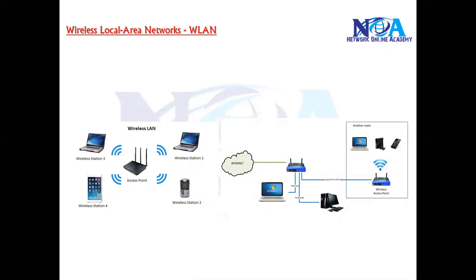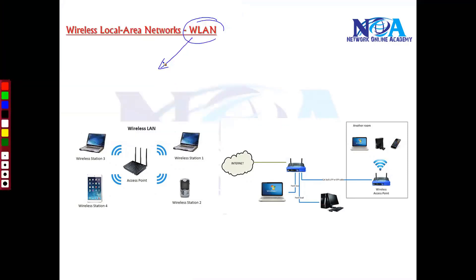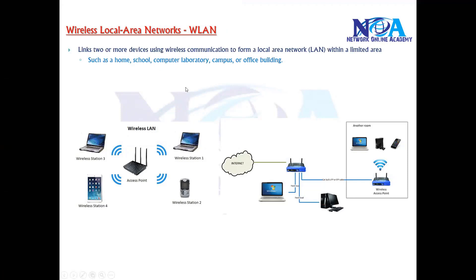In this video we will try to understand the different devices used in the wireless LAN. If you remember, in the previous sections we discussed the different types of wireless networks. The wireless LAN is what we are going to focus on more in our course. It covers interconnection of devices within your building, campus, or office such as a school, home, or computer laboratory, and can support an average distance of around 100 meters.